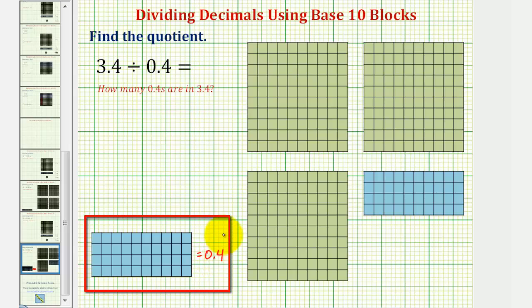To determine our quotient, we want to determine how many copies or how many sets of four longs are in three flats and four longs.